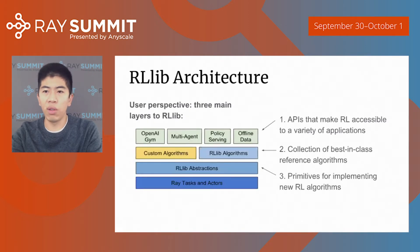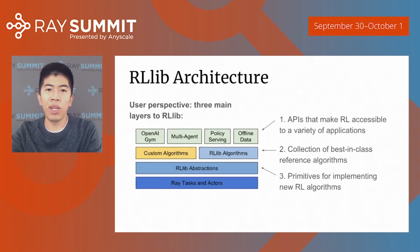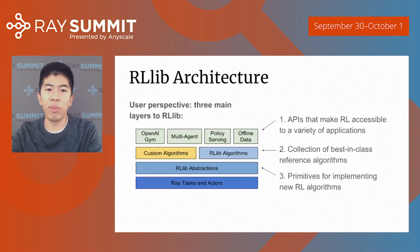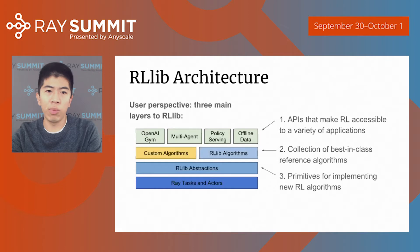So what is RLib? It's an open source library, and from the user perspective it has three main layers. The first layer is a unified API that makes reinforcement learning accessible from a variety of applications, including benchmark environments such as OpenAI Gym, multi-agent scenarios, serving policies to external systems, and processing and learning on offline or batch RL data. Second, it has a collection of best-in-class reference algorithms spanning model-free, model-based, and other types. And finally, it has primitives for implementing new reinforcement learning algorithms, which you might care about if you're a researcher or an RL engineer.